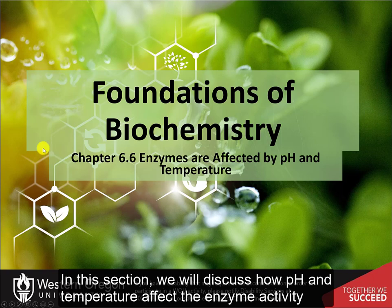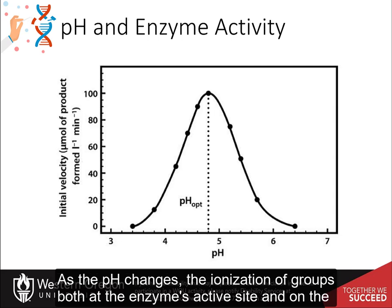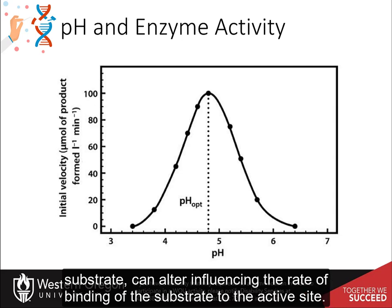In this section, we will discuss how pH and temperature affect enzyme activity. The pH profile is dependent on a number of factors. As the pH changes, the ionization of groups both at the enzyme's active site and on the substrate can alter, influencing the rate of binding of the substrate to the active site.